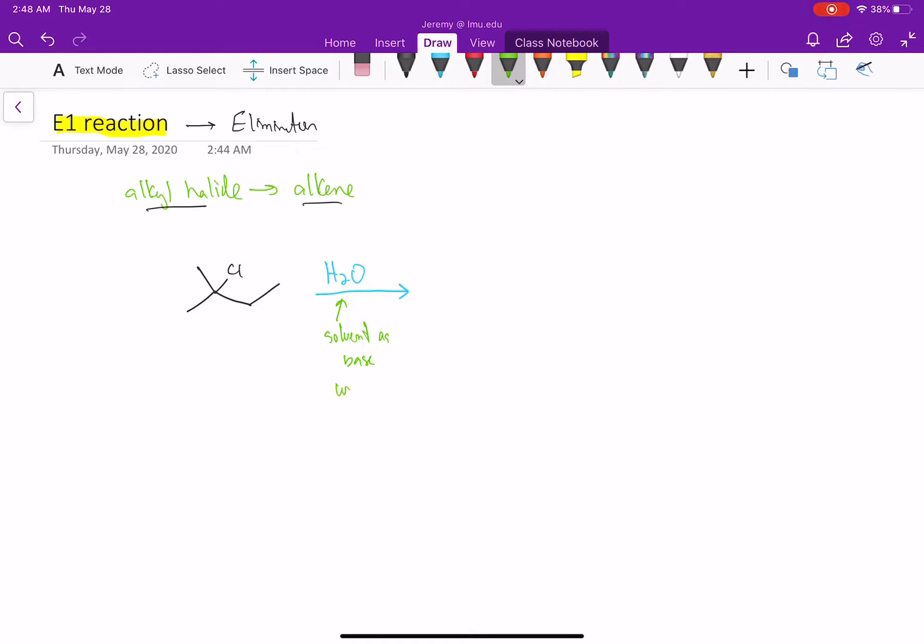So we're using a weaker base. This is really a much weaker base than sodium hydroxide. We're still going to get the same product out. We're going to be getting out an alkene. But the key difference is the mechanism.